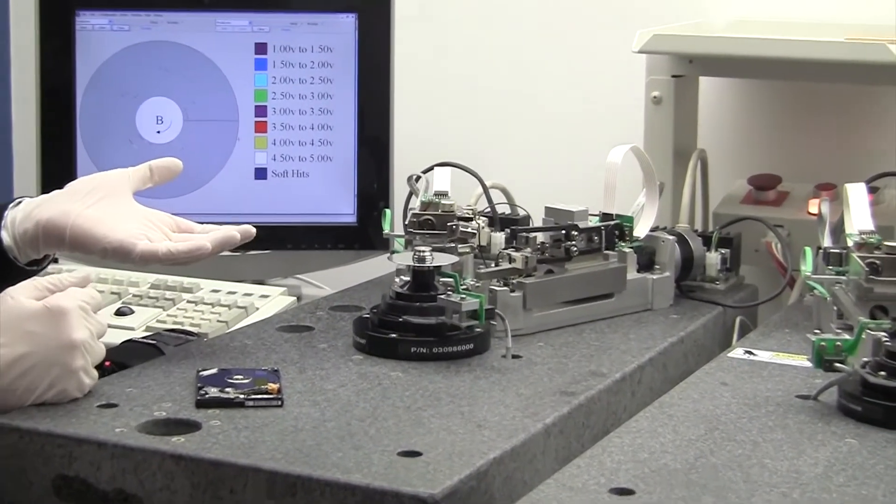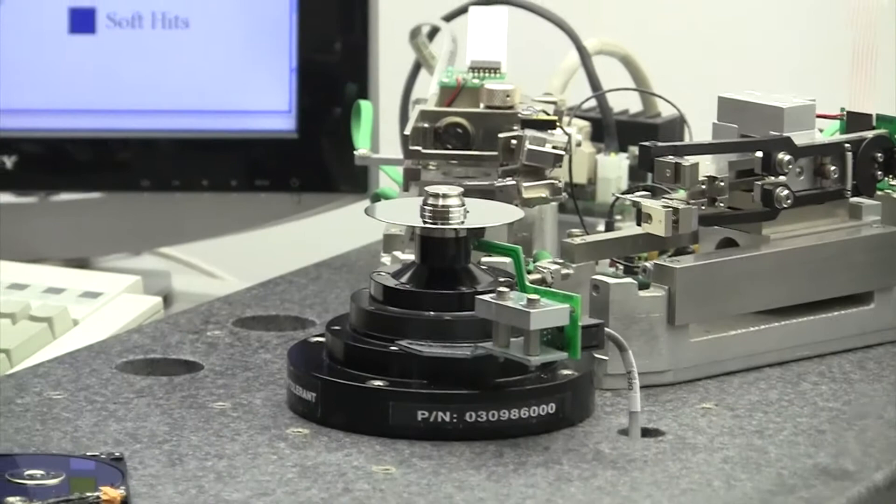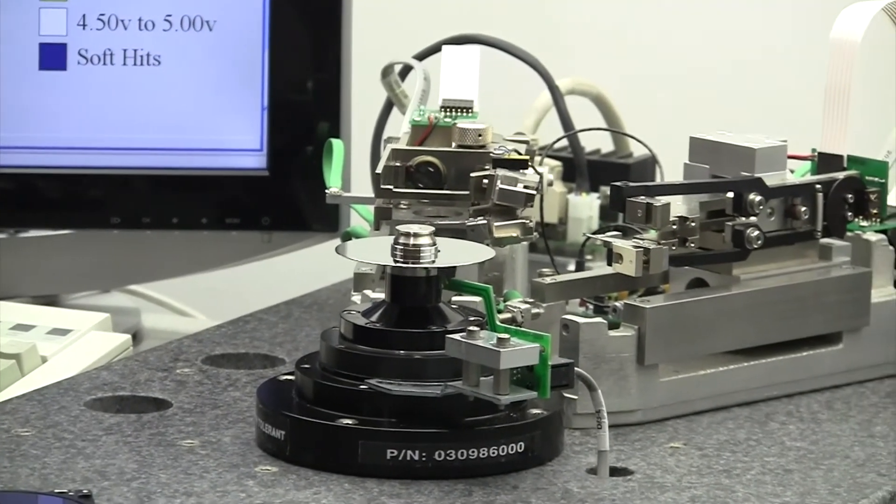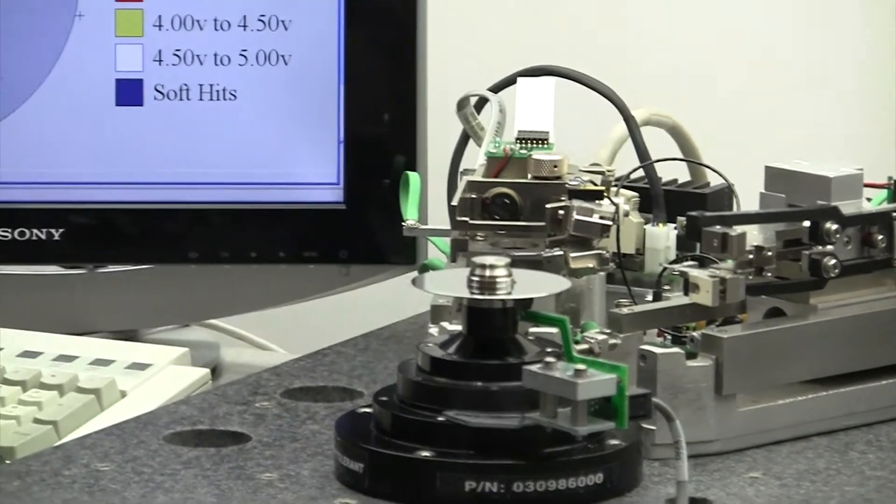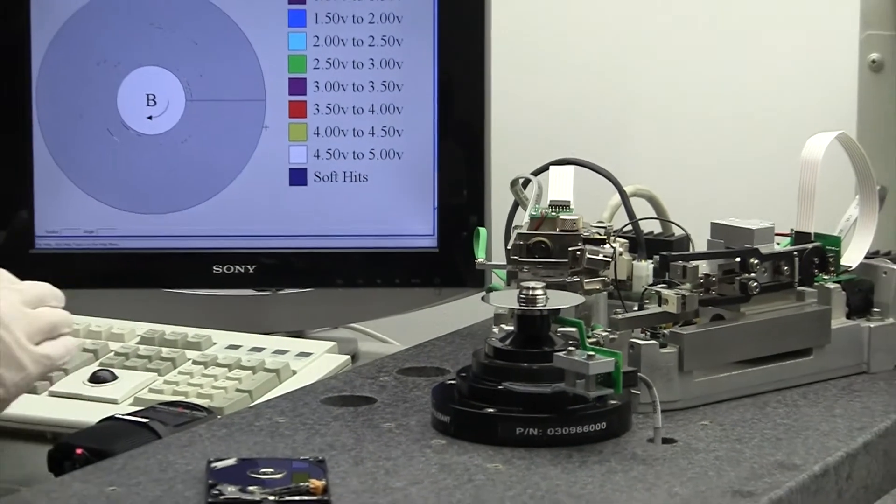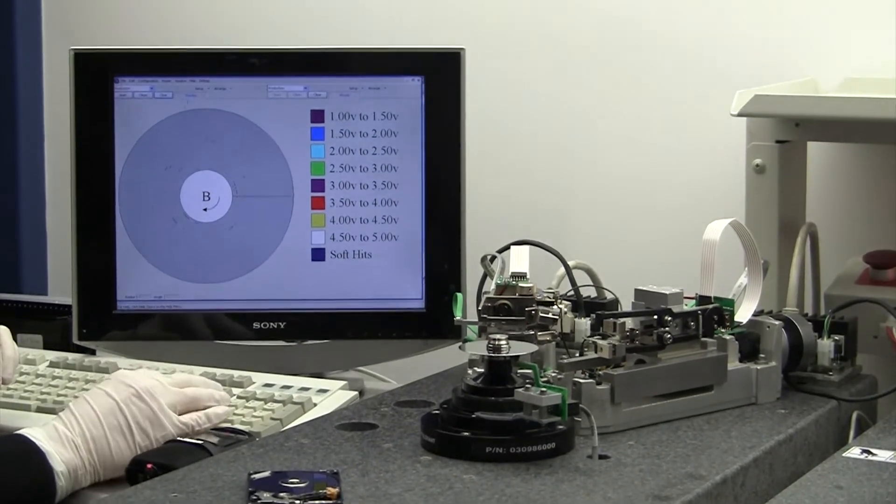And the glide test, any time it encounters debris, is actually going to record that encounter, that hit, so that we know, first off, how dirty the platter is. So I'm going to go ahead and set that up first.